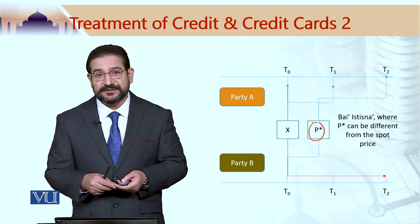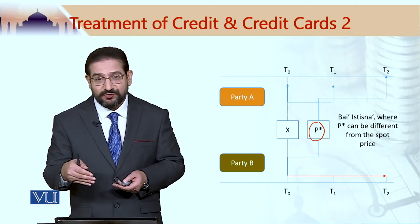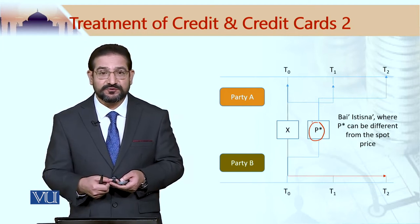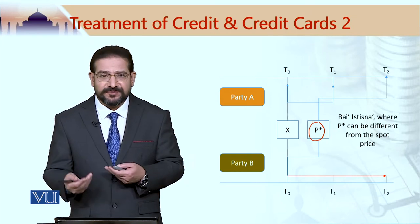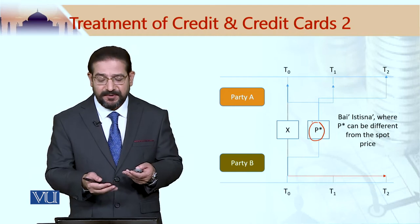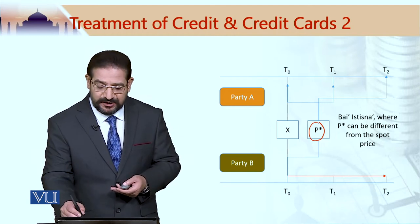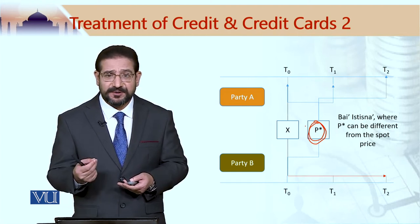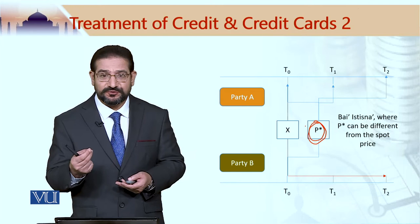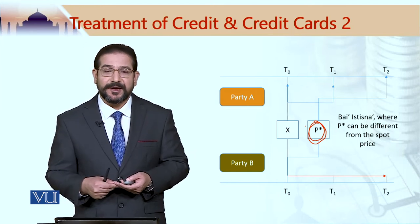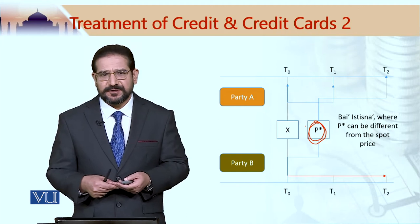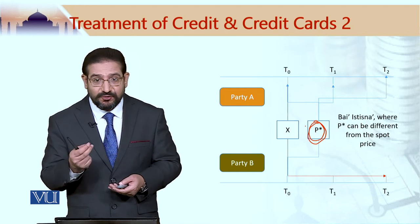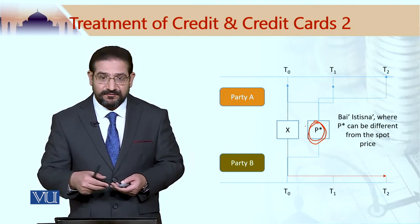Remember, in case of istisna, the item is manufactured over a certain time period and could be a unique item. However, if similar items are available in the market, the price charged by the seller could be higher because the seller may say they are producing a bespoke item. Or in certain cases, the seller might agree to a lower price because the cost of production could be lower for that seller.